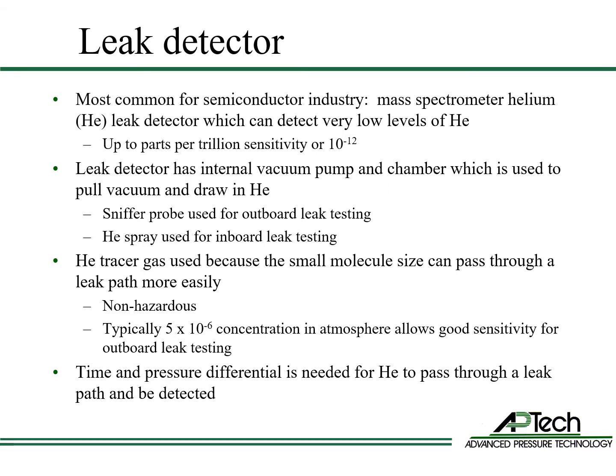In the semiconductor industry, a helium mass spectrometer is the most common type of leak detector. It uses vacuum to detect leaks. The mass spectrometer can detect very low levels of helium, some down to parts per trillion, or 1×10⁻¹² concentration of helium. Its internal vacuum pump and vacuum chamber pull vacuum and draw in helium. Helium is used as the tracer gas because its small molecule size passes through leak paths more easily than larger molecules. Helium is also non-hazardous and has naturally low concentrations in the atmosphere, typically about 5×10⁻⁶. This allows for good sensitivity when leak testing for an external leak into atmosphere. Time and pressure differential are needed for the small volumes of helium to pass through a leak path and be detected.